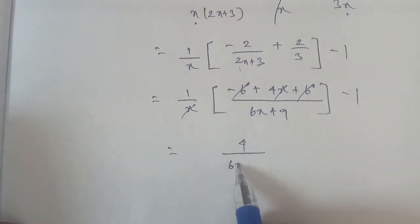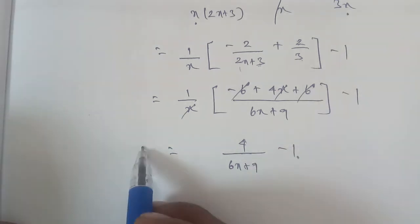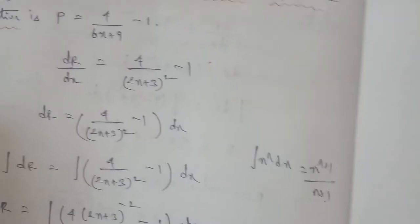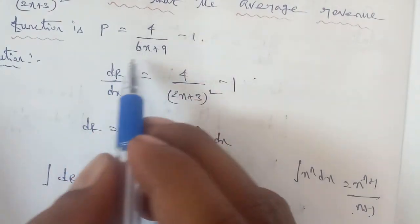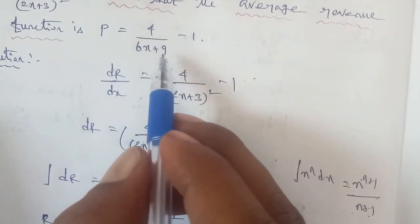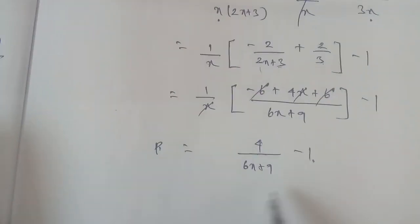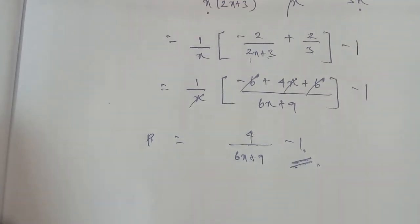Therefore, p equals 4 by (6x plus 9) minus 1. Hence proved. Thank you.